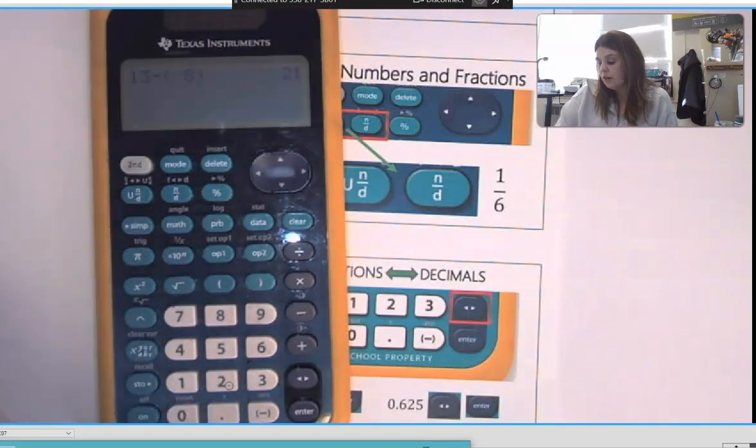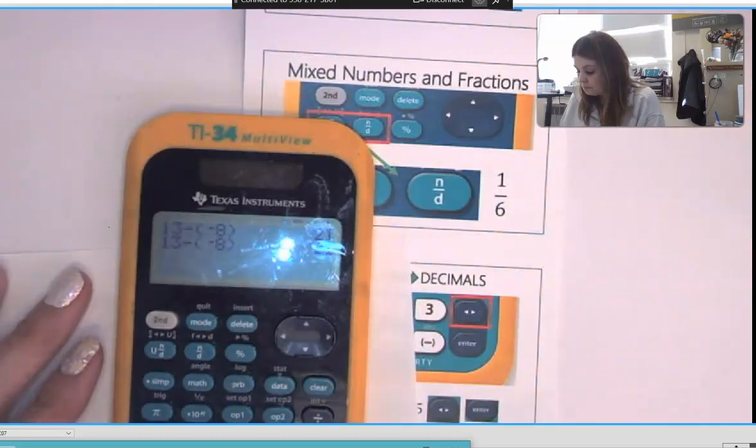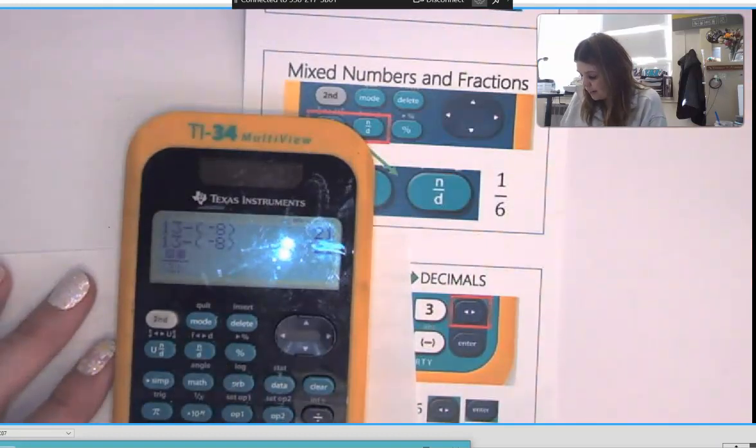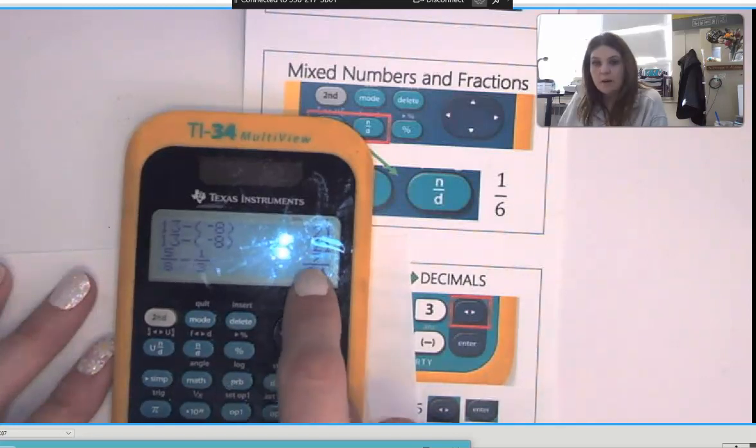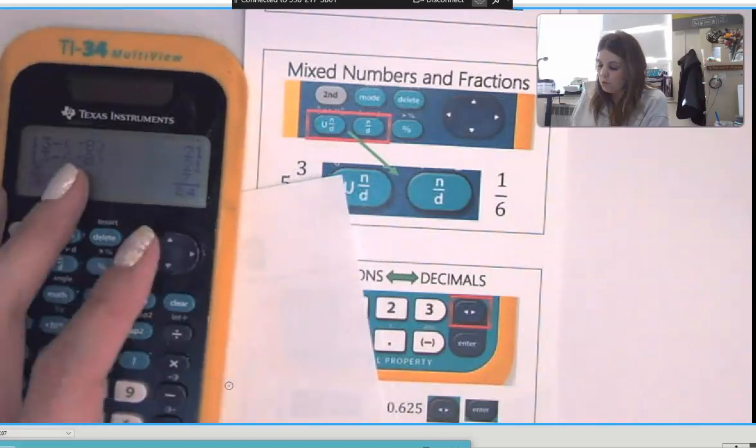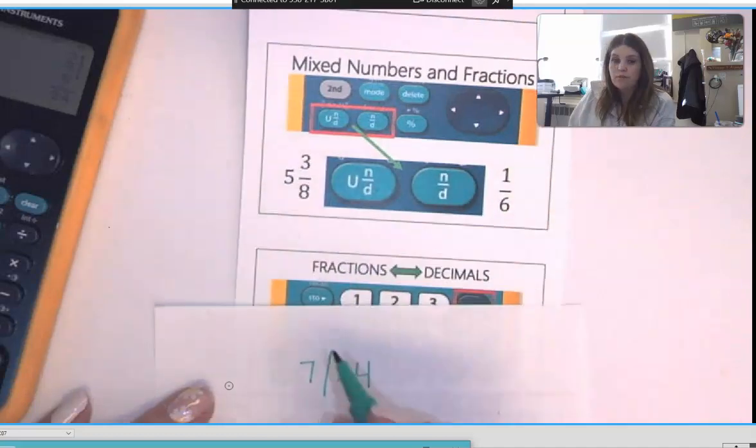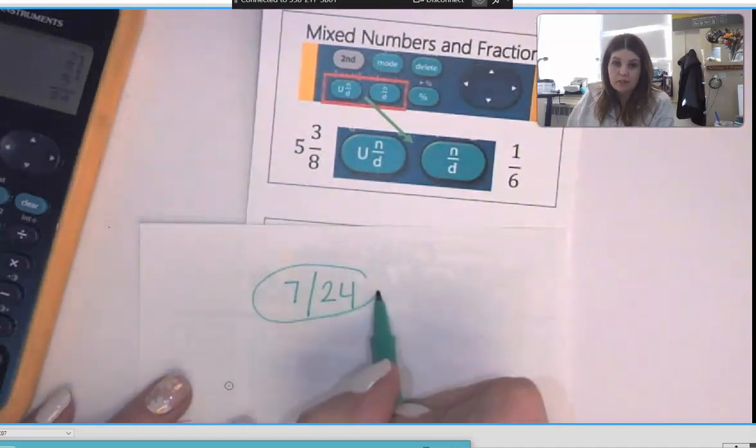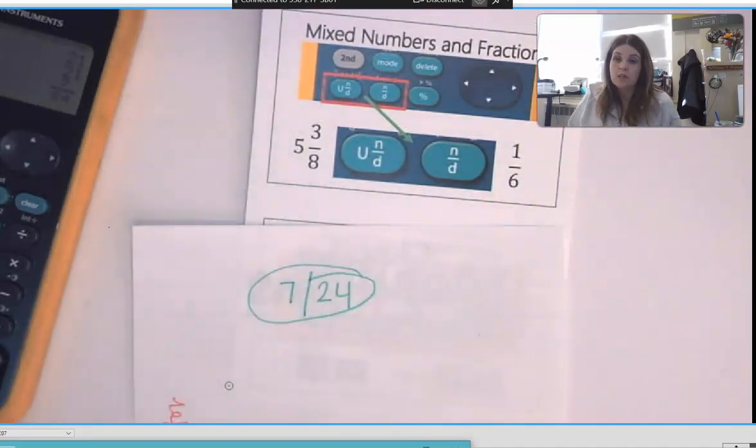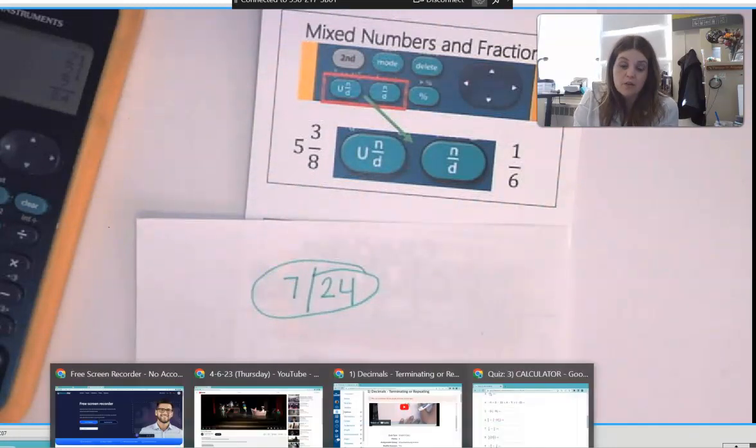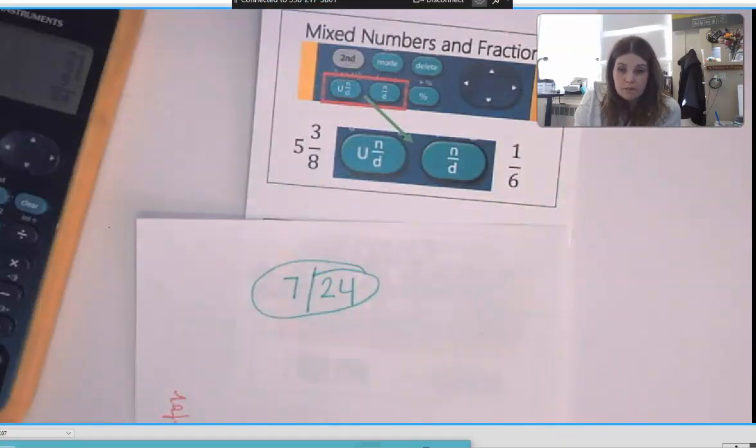Here when you're doing this subtraction problem to enter that into Canvas, so if I gave you like five eighths minus one third, my answer is seven over 24. To get that into Canvas, do seven backslash 24, enter it in like this with your backslash button. If you don't know where that is raise your hand and I'll come over and show you where that is on your Chromebook.